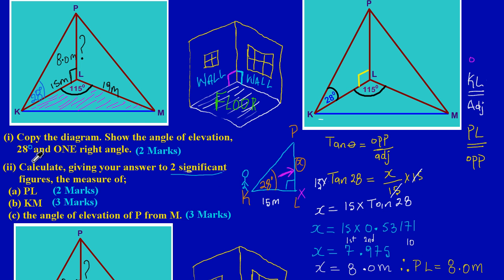In this video we're going to be looking at part 2b, where we're asked to calculate the length KM. If you look on the diagram carefully, it's the base triangle — the surface or floor of the diagram. The distance or length KM would be this distance here on this side.